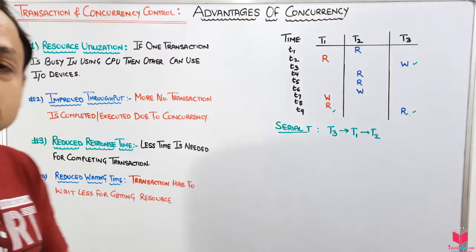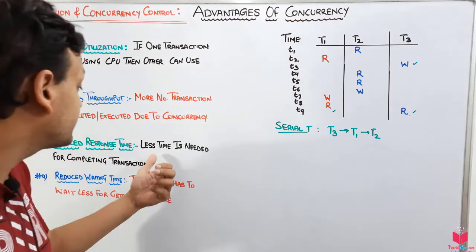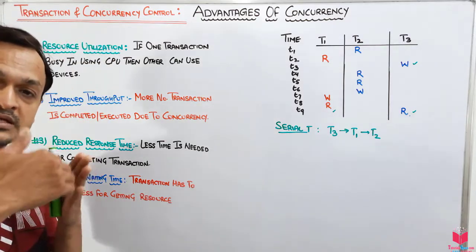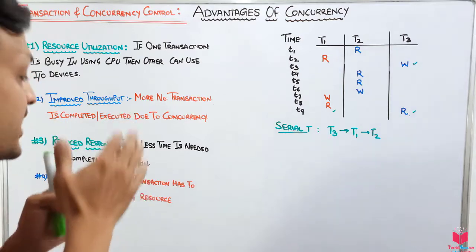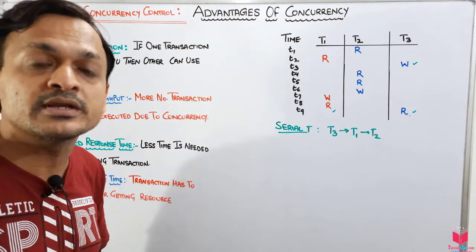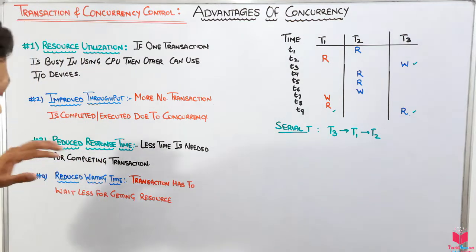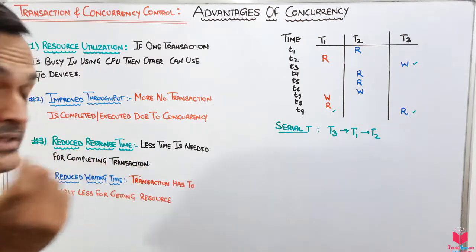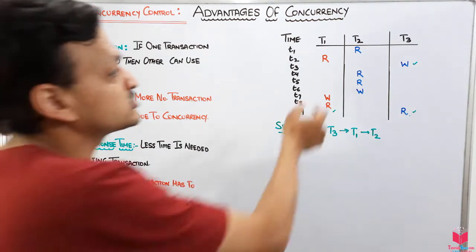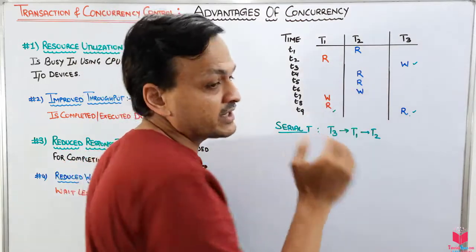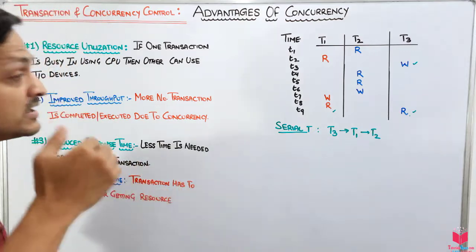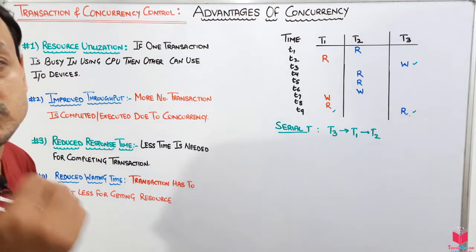The third advantage is reduced response time. Response time is the time from when a transaction or request is submitted to the CPU until it reaches the commit state and completes. Because small portions of transactions get executed in turn, transactions have to wait less for other resources, resulting in reduced response time.